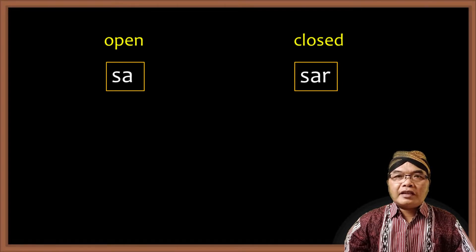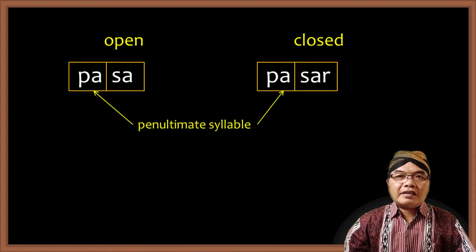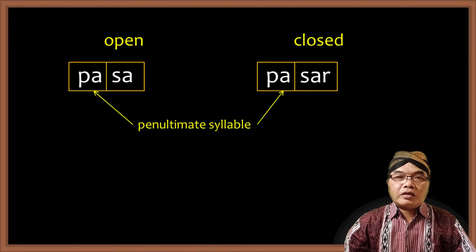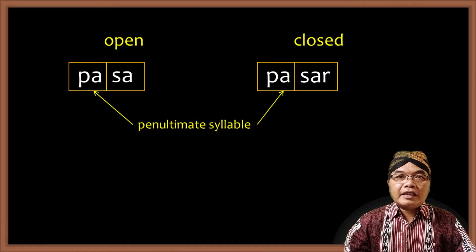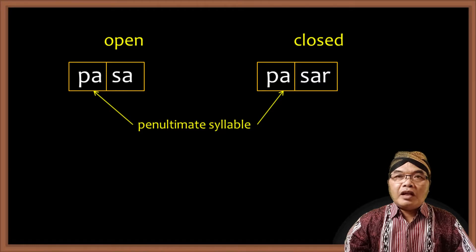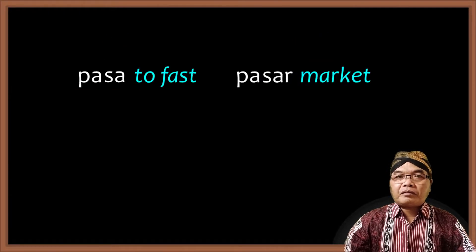Now let's look at the penultimate syllable — that's the syllable before the last syllable. Like in the first word, it's PO, so the word is POSO. And in the second word it's PA, so the word is PASAR. I already talked about this in my previous video.